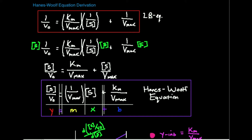If you use the Haynes-Wolf equation, you'll actually get the same answer for Vmax and Km. So let's go into the derivation. We have the Lineweaver-Burk equation: one over the initial rate is equal to Km over Vmax, times one over the substrate concentration, plus one over Vmax. This is in the form of a straight line — one over the initial rate is Y, Km over Vmax is the slope M, one over substrate concentration is X, and the Y-intercept is one over Vmax.